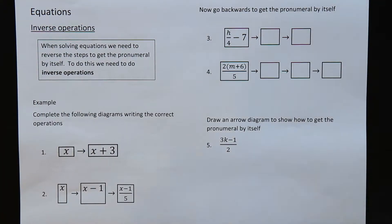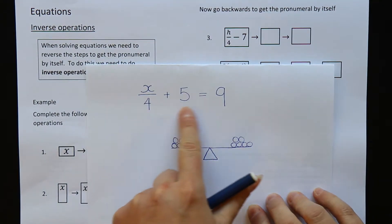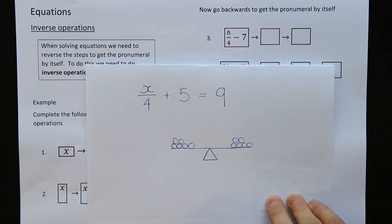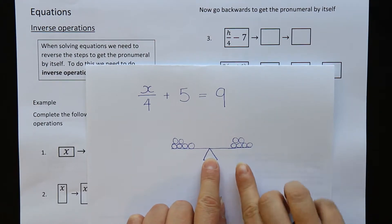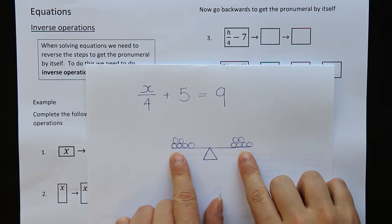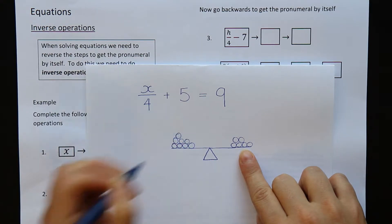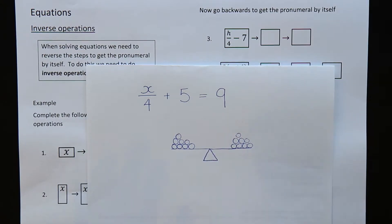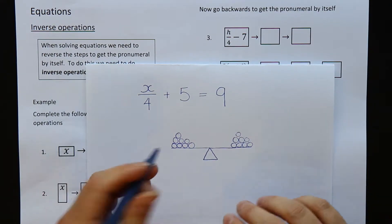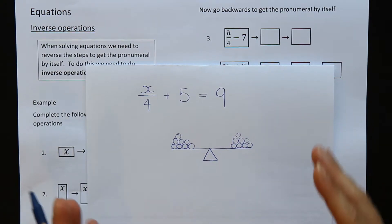On this piece of paper here I have an example of an equation that we're going to learn to solve in a few lessons time. An equation is like a balancing scale. The equal sign is like the balance in the middle and we have to keep things balanced on either side of the equation. If I add things to this side of the equation I have to also add the same thing to this side, otherwise it won't be balanced. If I take things away from one side I have to take it away from the other side, otherwise my equation won't be balanced.